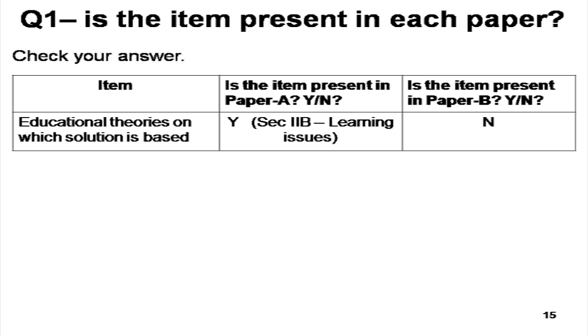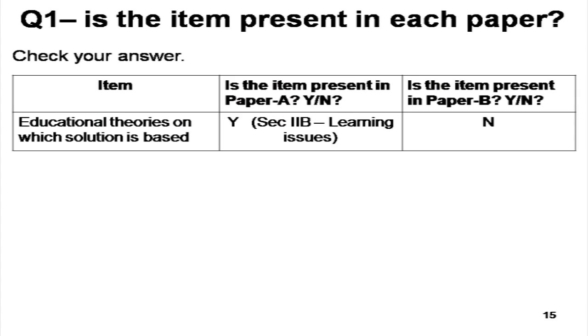There is also an item which asked whether the papers state the educational theories on which the solution is based. We will talk a lot more about this next week and you will have to do some assignments related to educational theories, because this part might be somewhat new to faculty members in engineering, computer science, and the sciences. If you look at paper A, they do talk about the learning theories and learning issues on which their solution is based, whereas this point is completely missing in paper B.